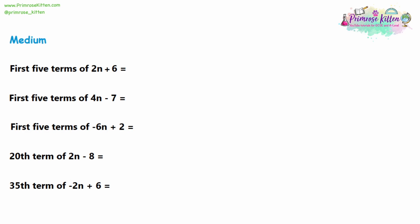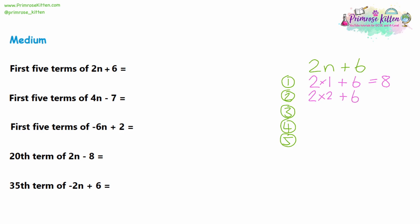Moving on to the medium questions — we're now describing sequences using algebra. The first sequence is the 2n plus 6 sequence. What we're going to do is swap n with different numbers; for the first 5 terms we swap n with 1, 2, 3, 4 and 5. So in 2n plus 6, if n is 1, that would be 2 times 1 plus 6 — 2 times 1 is 2, plus 6 is 8. When n is 2, that would be 2 times 2 plus 6 — 2 times 2 is 4, plus 6 is 10.